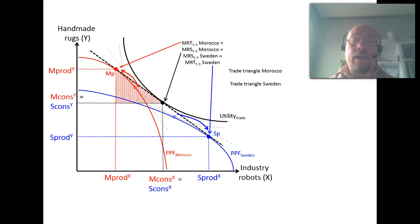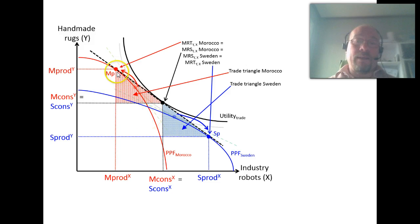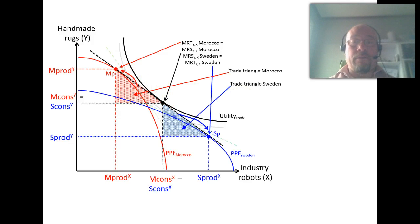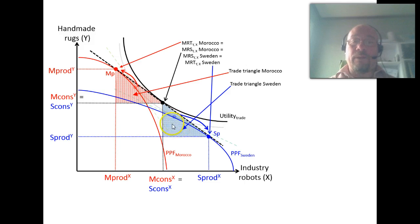What we are looking at now is something called the Trade Triangle in the textbook. This is the export, this is the import, and then the consumption possibility frontier forms the third side of the triangle. In Morocco, that's the red triangle, and the same area in Sweden is the blue one.